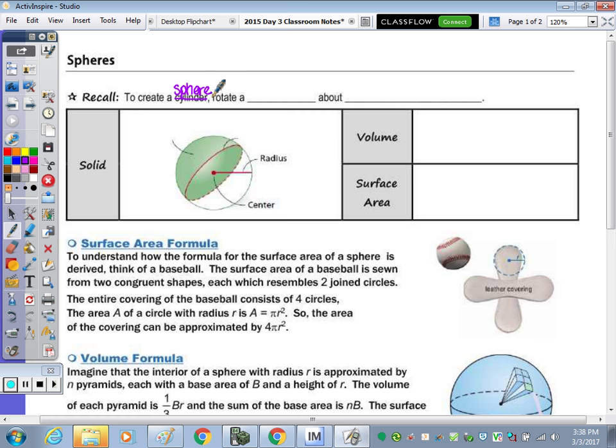We rotate a circle about a diameter. So we take a look at the sphere. We have half of the sphere shaded in green, and half of a sphere is called a hemisphere.